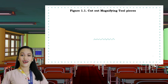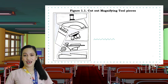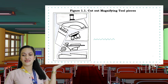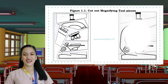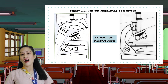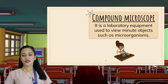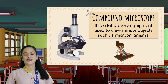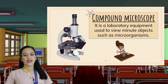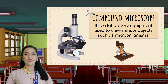Let's begin our lesson with these cut-out pictures. Turn your modules to 'What's New,' Activity 1: Figure It Out. What do you think does this picture look like if we assemble these pieces together? This picture shows a compound microscope. A compound microscope is a laboratory equipment used to view and study minute objects such as microorganisms. Scientists were able to come up with one of the greatest inventions in the field of science — the microscope.